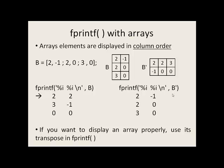We have no more elements in b' to print off. So the lesson to take from this is that array elements are displayed in column order. And if you want to display the contents of b in the format we're used to, you want to display the transpose of that array.